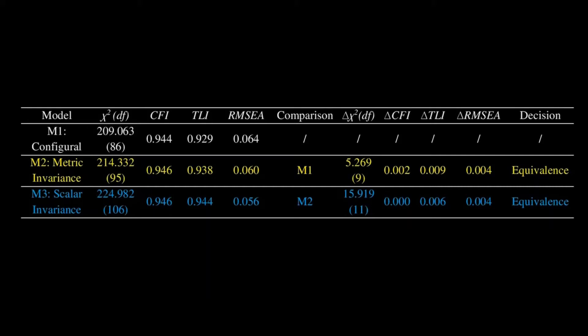As you can see in the delta chi-square column, the chi-square is not significant. It's 15.91 with 11 degrees of freedom, and that is not significant, so it argues that the models are equivalent. Likewise, the changes in the comparative fit index, Tucker-Lewis index, and the root-mean-square error of approximation all argue for equivalence because they do not exceed the recommended values.